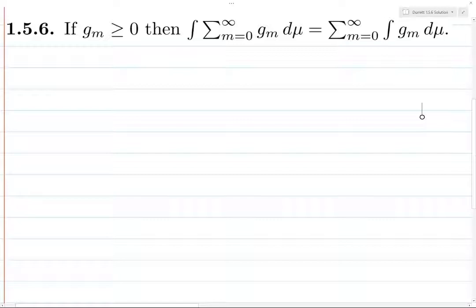But that's not really necessary, because this is actually a pretty straightforward proof. It's basically just monotone convergence, because all the g_m are positive.